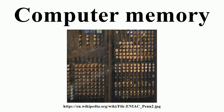Volatile memory is computer memory that requires power to maintain the stored information. Most modern semiconductor volatile memory is either static RAM or dynamic RAM. SRAM retains its contents as long as the power is connected and is easy for interfacing, but uses six transistors per bit. Dynamic RAM is more complicated for interfacing and control, needing regular refresh cycles to prevent losing its contents, but uses only one transistor and one capacitor per bit, allowing it to reach much higher densities and much cheaper per bit costs. SRAM is not worthwhile for desktop system memory, where DRAM dominates, but is used for their cache memories. SRAM is commonplace in small embedded systems, which might only need tens of kilobytes or less.